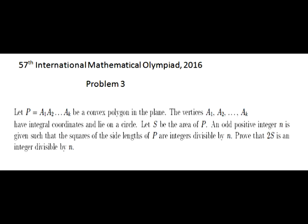Let P be a convex polygon in the plane. The vertices A1, A2 up to Ak have integral coordinates and lie on a circle. Let S be the area of the polygon. An odd positive integer n is given such that the squares of the side lengths of P are integers divisible by n. Prove that the doubled area of the polygon is an integer divisible by n.